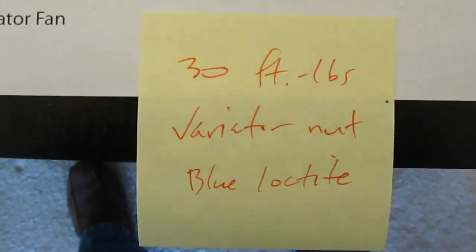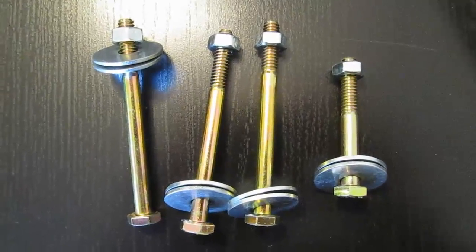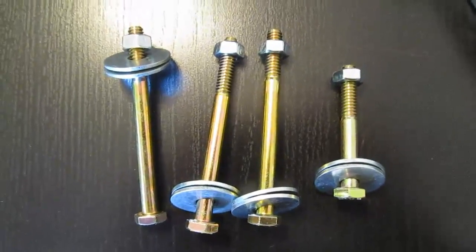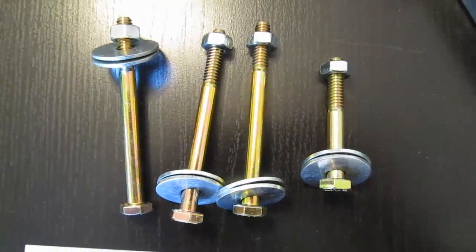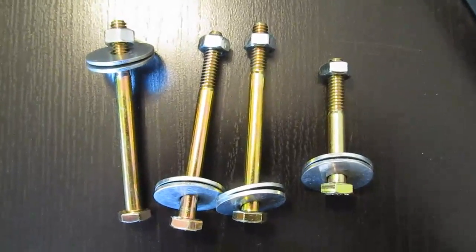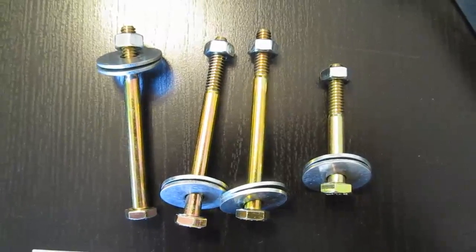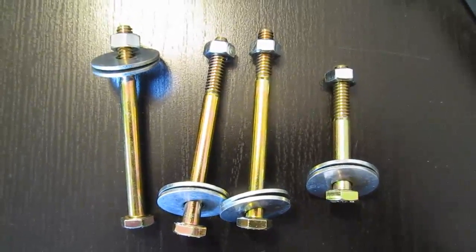And here's the torque spec. I'm going to use 30 foot pounds on the variator nut. For the fastener hardware, you're going to need four bolts. They're all quarter inch diameter. Three of the bolts are three inches long, and one is two inches long. You'll need eight washers, which are one inch in diameter for a quarter inch bolt. And you'll need four quarter inch hex nuts.